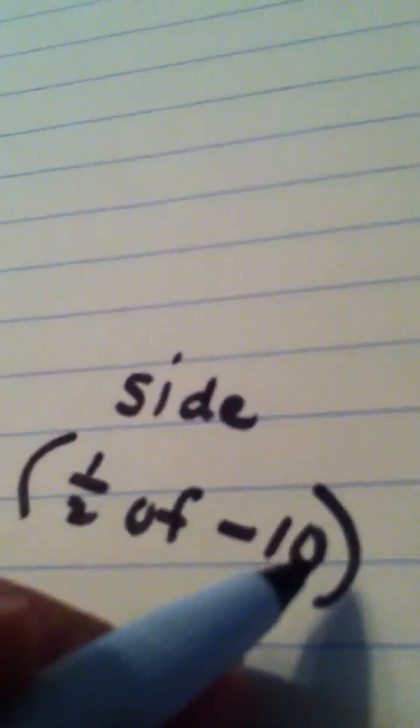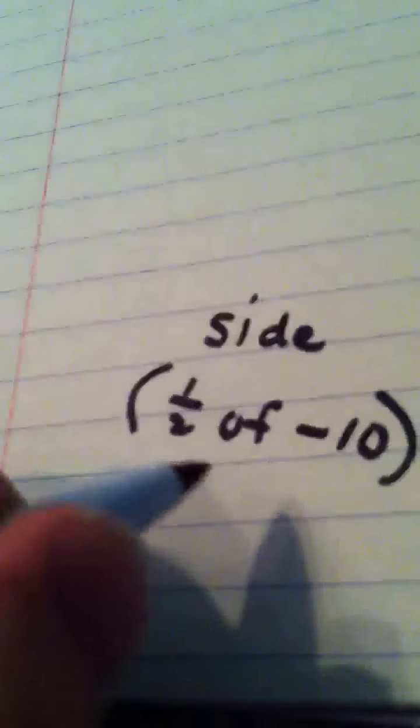So what that means, I go off to the side here. I take half of negative 10, because that's my coefficient of the x. I take half of negative 10 and I square it. Negative 5 quantity squared is 25.